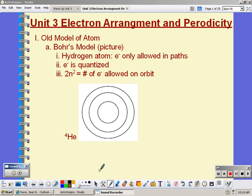Unit 3 is about electron configuration and periodicity, or repeating properties that are found on the periodic table.